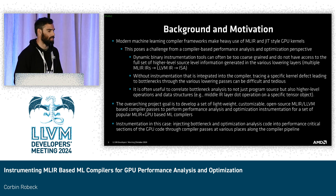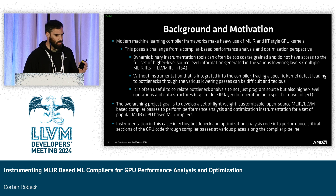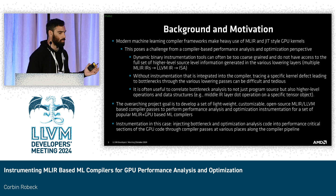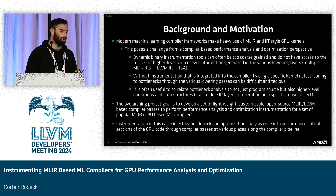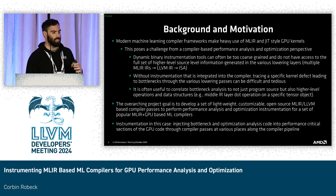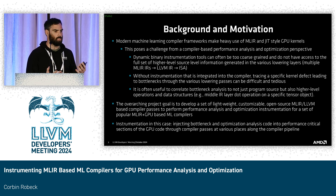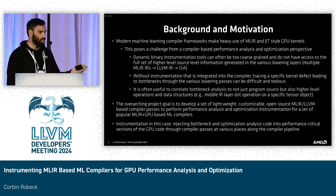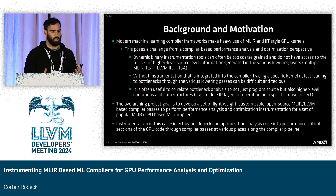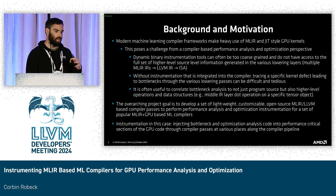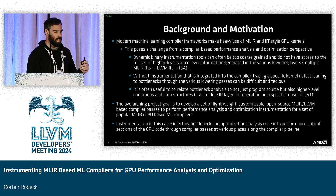The background for this is that there are machine learning compilers and frameworks that use MLIR and GPU kernels pretty extensively. This poses a challenge from a compiler-based performance analysis perspective. You can use dynamic binary instrumentation tools, but those are often fairly coarse-grained and it's difficult to get higher-level source-level information. You have debug information, but you lose information you have in the compiler that you can make use of. If you instrument in the compiler, you can trace specific GPU kernel defects that lead to bottlenecks through the various lowering phases, which are usually pretty tedious if you don't have tools baked into the pipeline. We found this very useful in getting information from the program source at higher-level data operations.